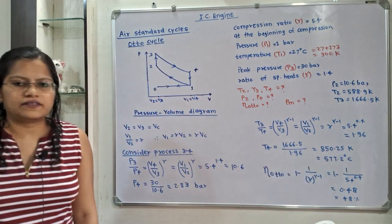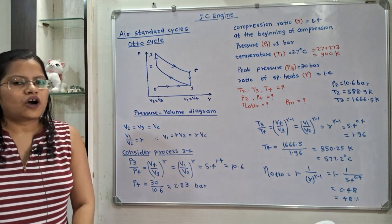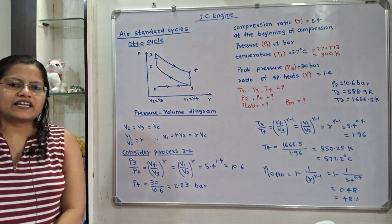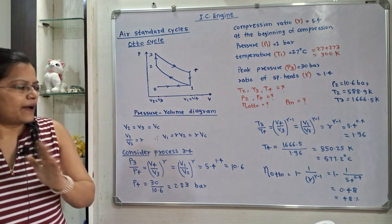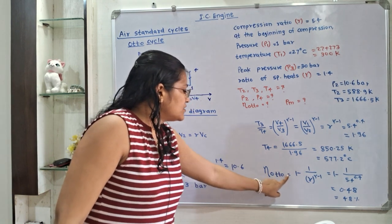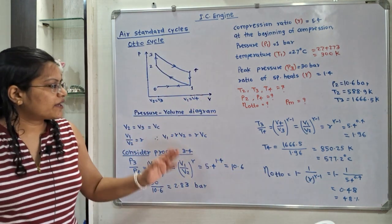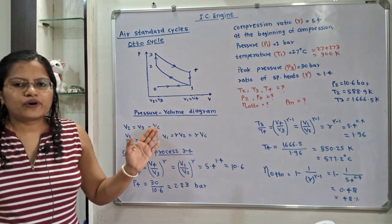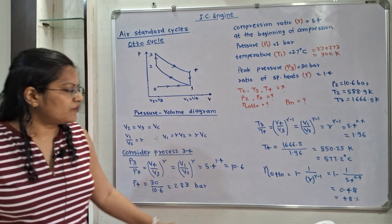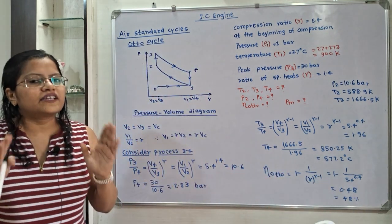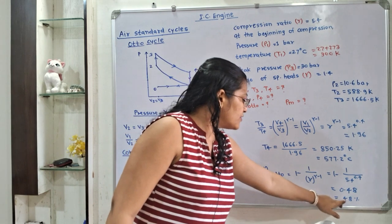Next, we find the efficiency of the Otto cycle. The formula in terms of R and γ is: efficiency = 1 − 1/(R^(γ−1)) = 1 − 1/(5.4^0.4) = 1 − 1/1.96 = 0.48. Multiplying by 100, the air standard efficiency is 48%.